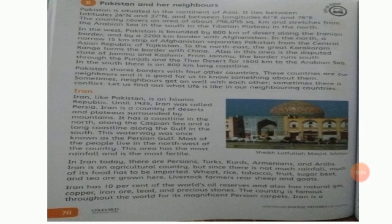From Jammu, the border runs south through the Punjab and the Thar desert for 1,500 kilometers to the Arabian Sea. In the south, there is an 800 kilometer long coastline. Pakistan shares borders with four other countries.